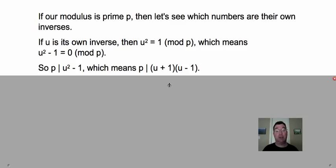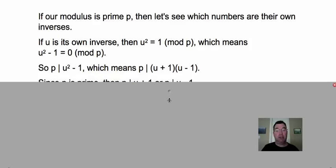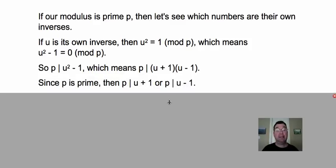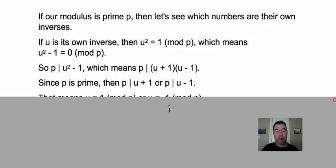It's a difference of squares. So that means that p has to divide (u + 1)(u - 1). And since p is prime, then p either divides u + 1, or p divides u - 1. There's no other factor that can do that.